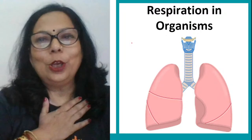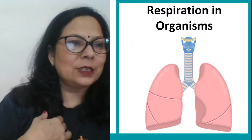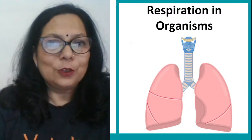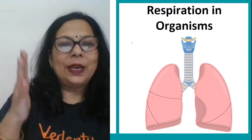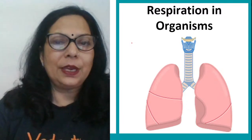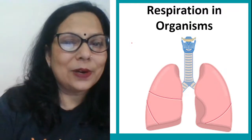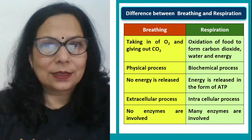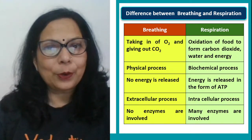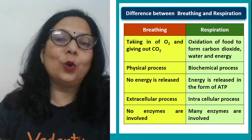Respiration in organisms — what do you mean by respiration? Is it only breathing? Taking in of oxygen and giving out of carbon dioxide — that is breathing. Respiration has two parts: one is breathing, and second is the utilization of that oxygen to oxidize food and release energy molecules in the form of ATP in mitochondria. Difference between breathing and respiration: breathing is just taking in oxygen and giving out carbon dioxide. It is a physical process — just gases coming in and out. No energy is released. It happens outside the cells and no enzymes are involved.